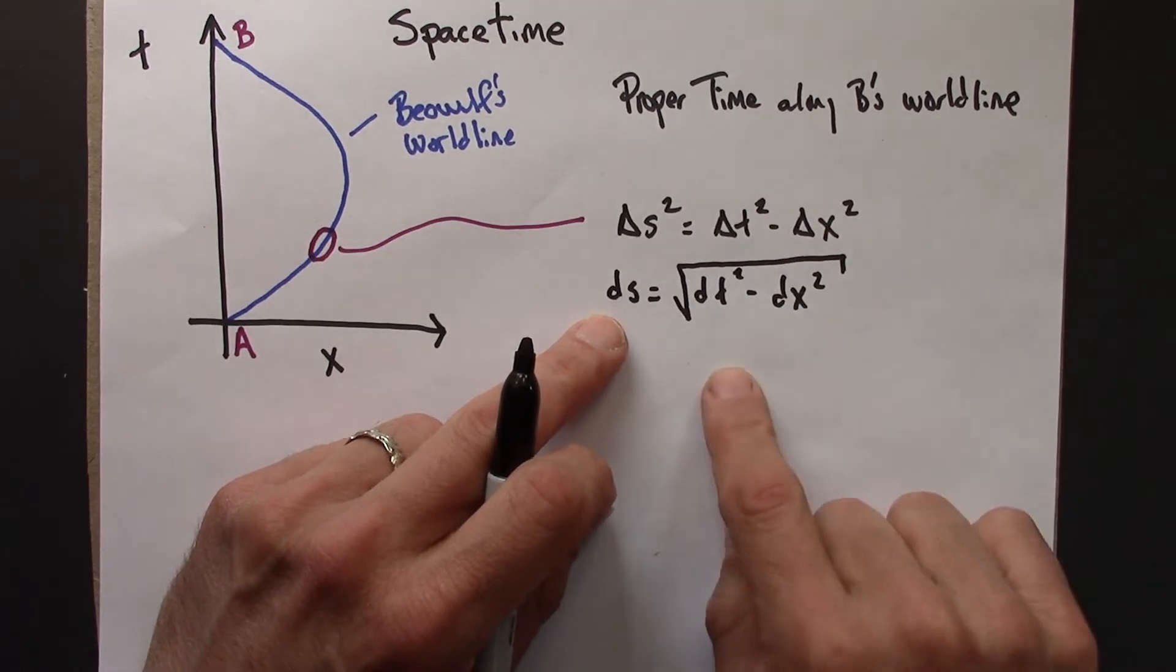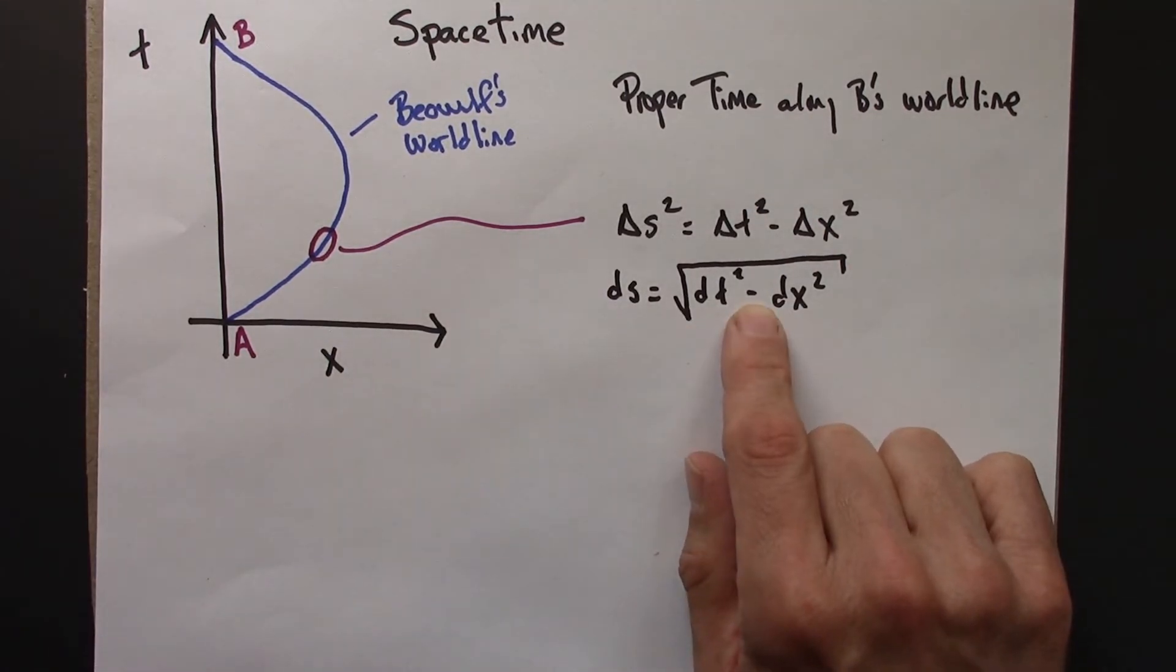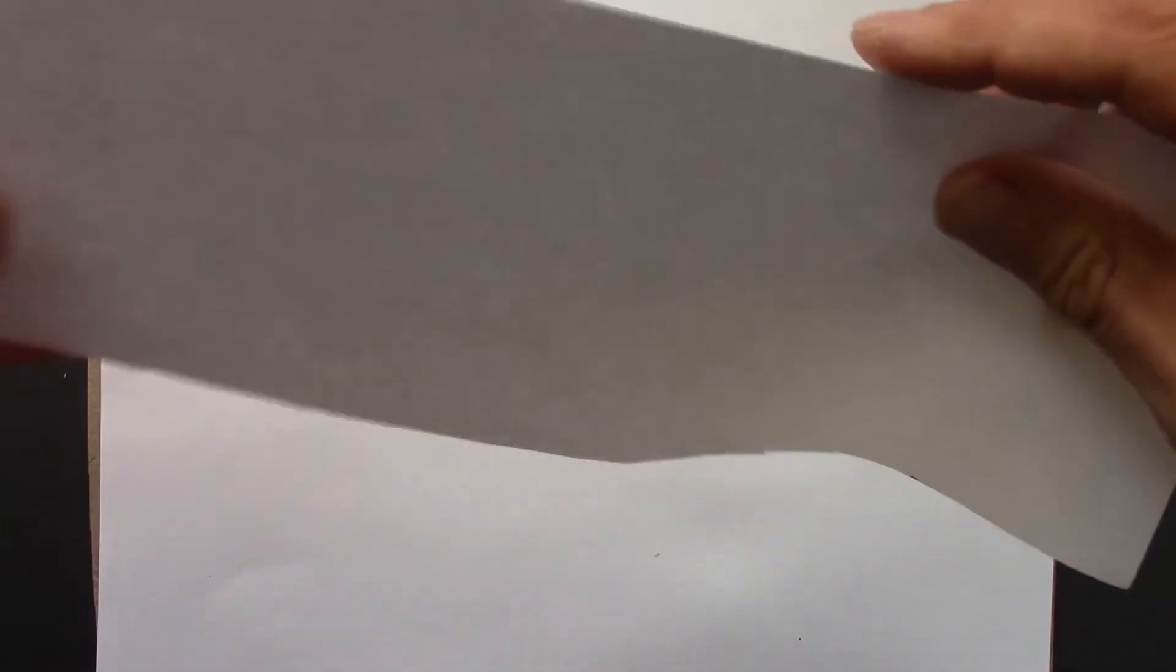Before we add up all of these using an integral again, I want to do a little bit of algebra on this term, to put in a simpler form, just like I did algebra on the square root term for the distance example.